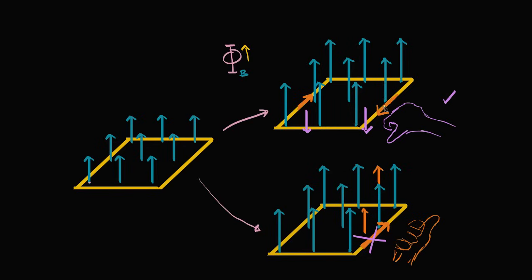The induced magnetic field from the induced current goes against the change in flux. This makes sense because we won't enter a never-ending positive feedback loop where the current and flux keep growing without bound. This idea — that the orientation of the induced current produces a magnetic field that counteracts the change in flux — is Lenz's Law.